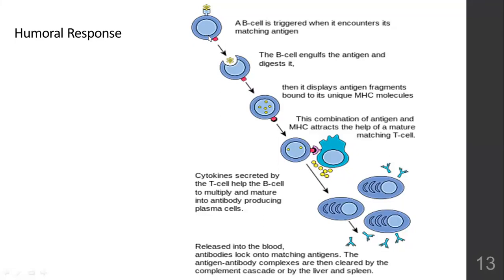So it's a long process: the B cell encounters an antigen, breaks it down, studies it, and begins making antibodies. This attracts mature T cells because cytokines are being released. With the help of cytokines released by the T cells, more and more B cells with the compatible antibody information will multiply, releasing more antibodies into the bloodstream. These antibodies will take care of the infection. This is the humoral response.